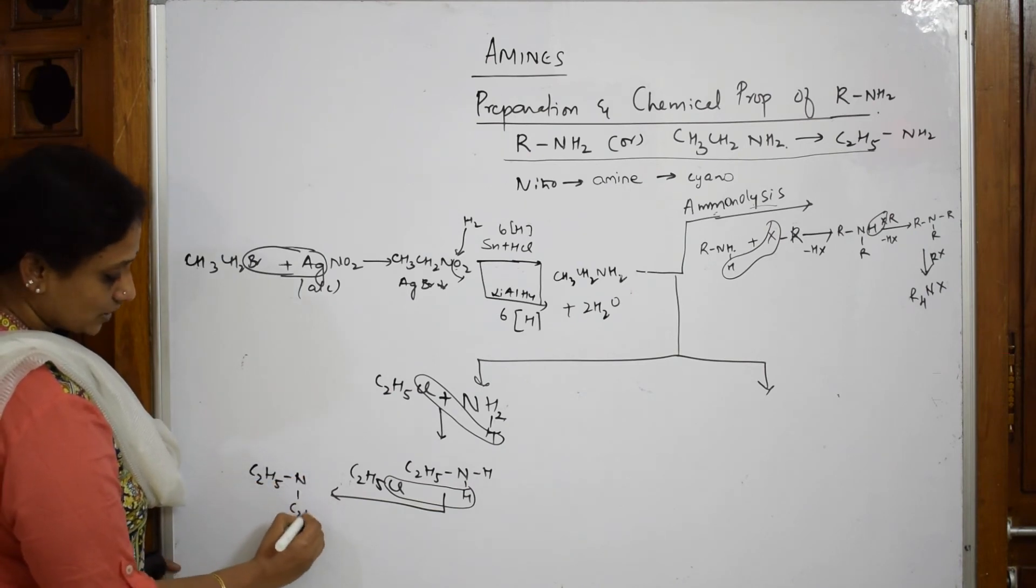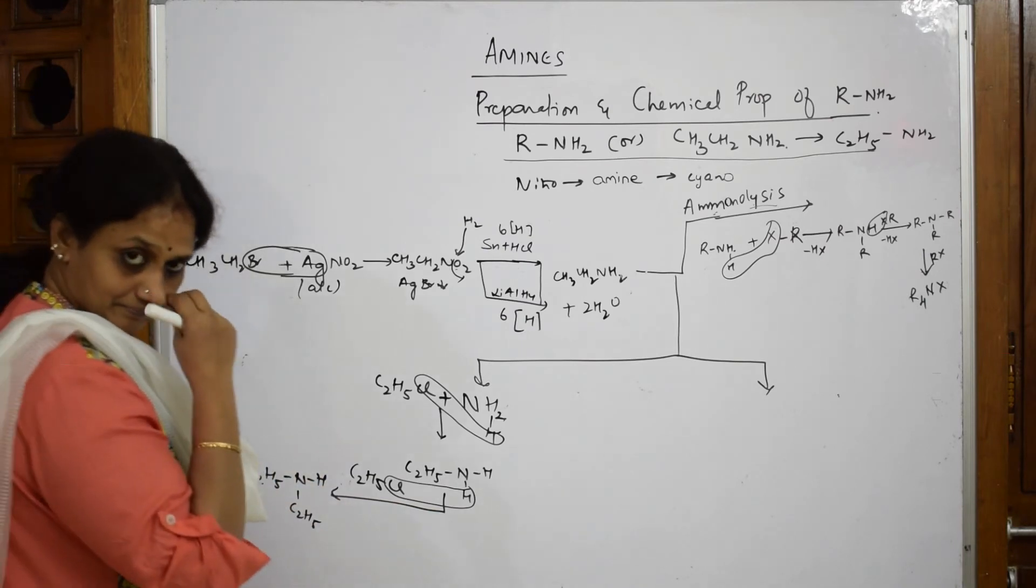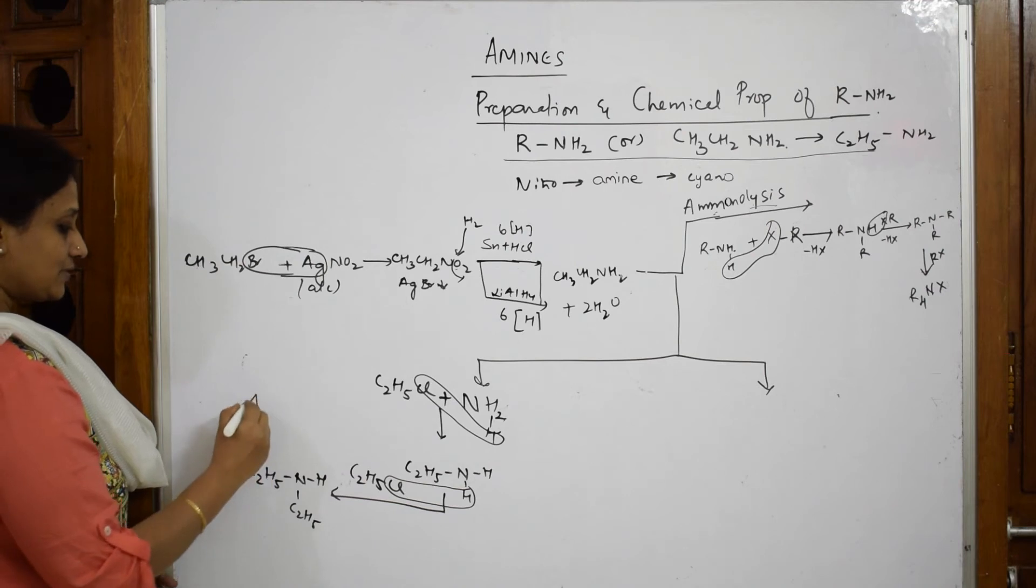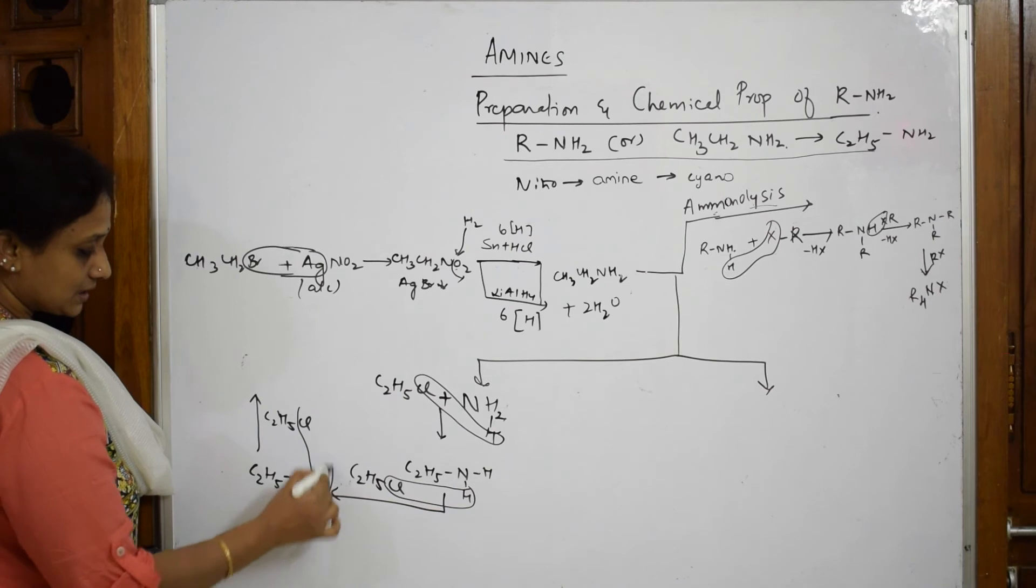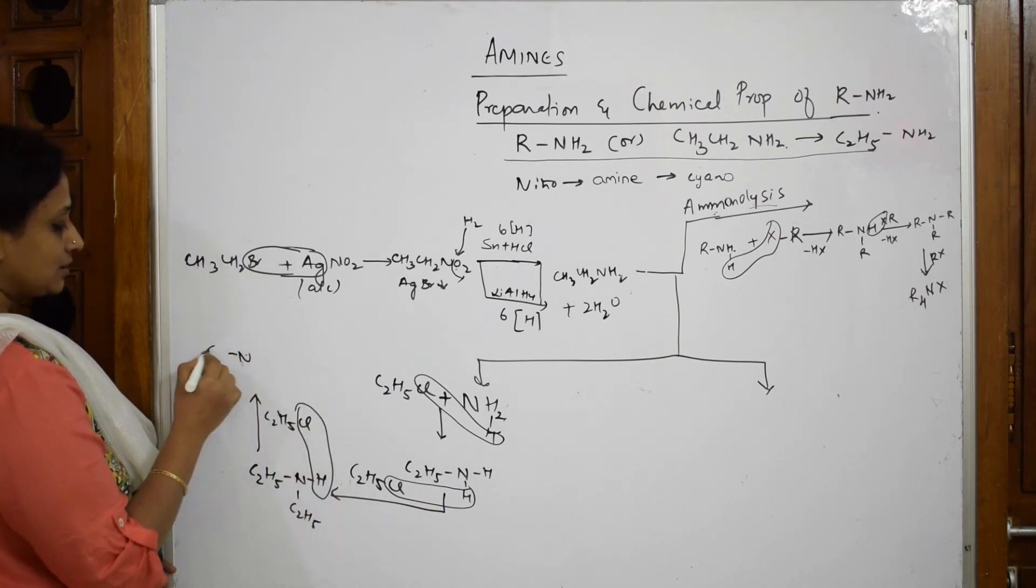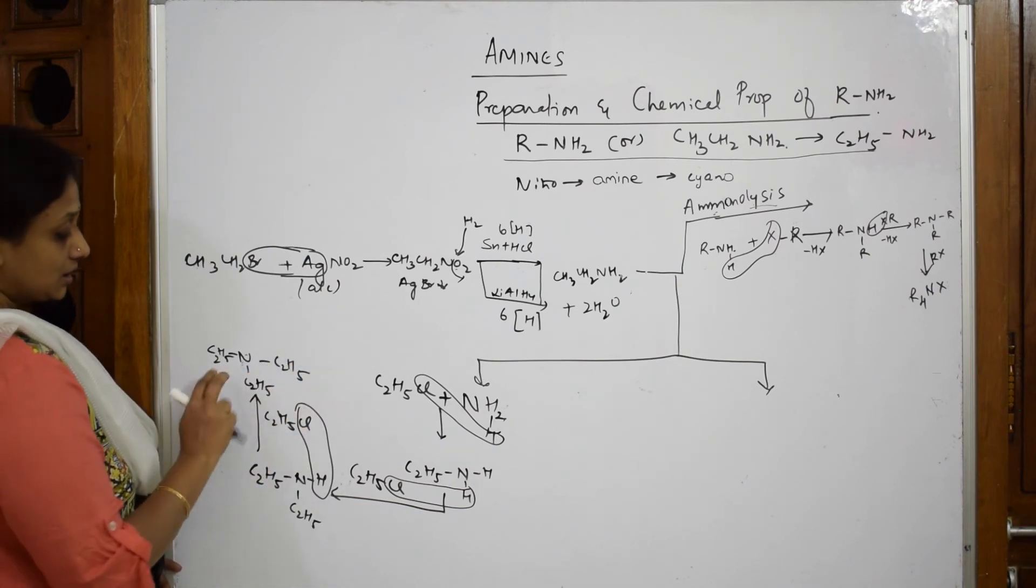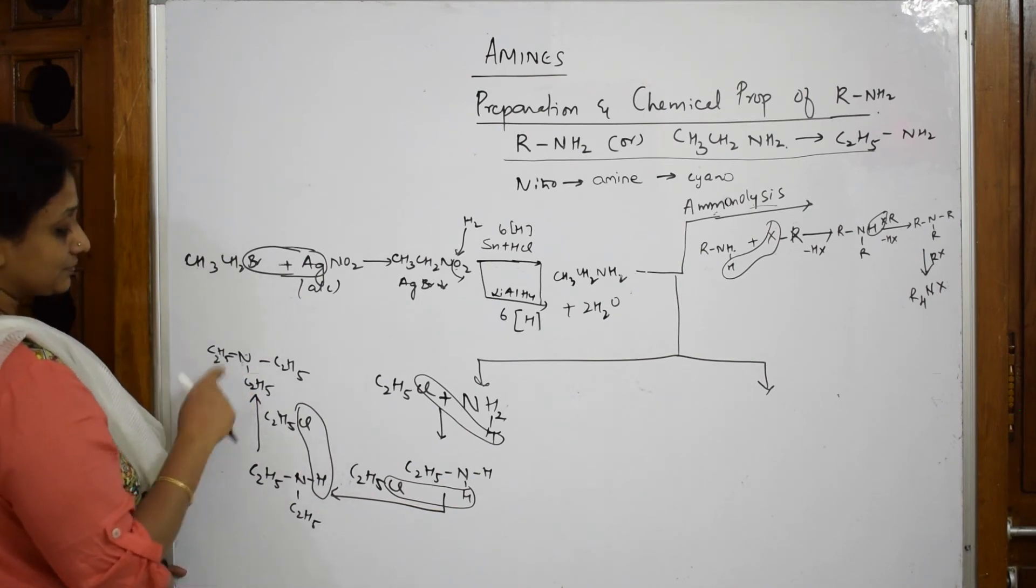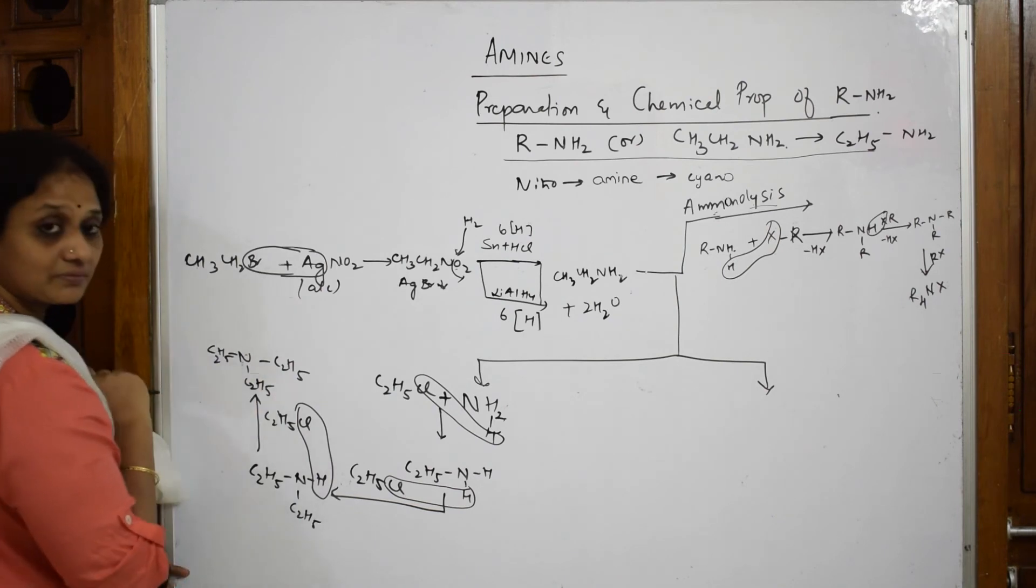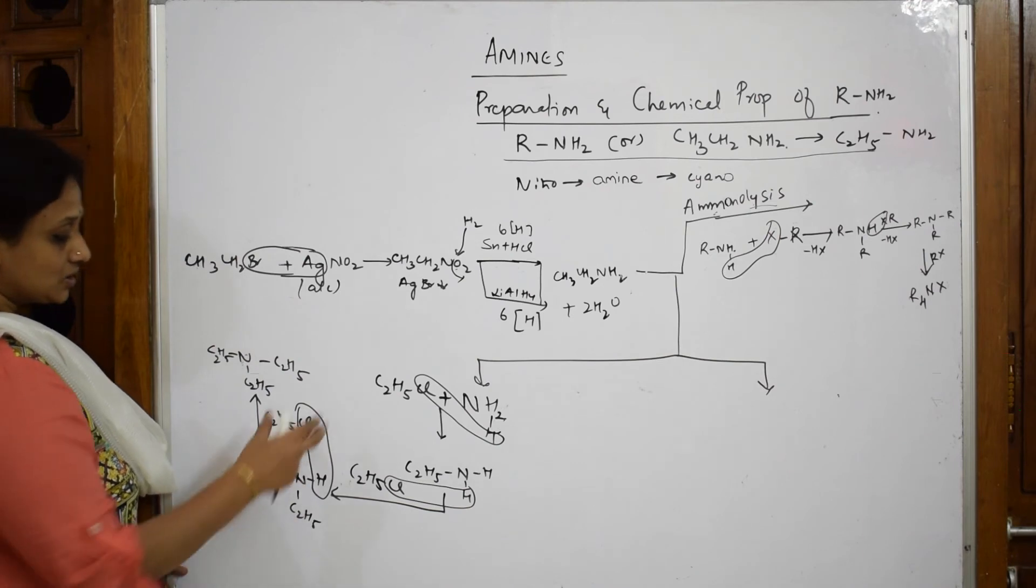To this particular thing, you introduce one more C2H5Cl. HCl comes out and you get N with three C2H5 groups - triethylamine. This is your aminolysis.